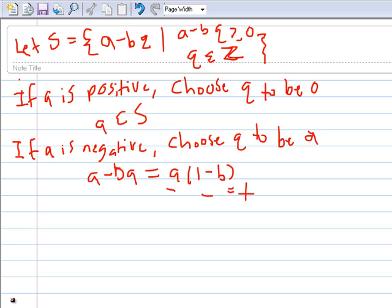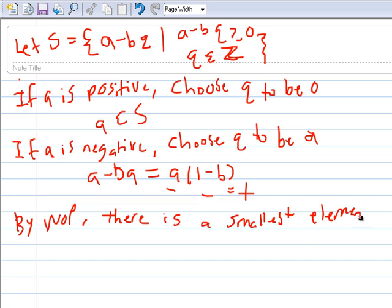So we have shown that there is always going to be an element in S whether A is positive or negative. So now, by the well-ordering principle, there is a smallest element. Call it A minus BQ.